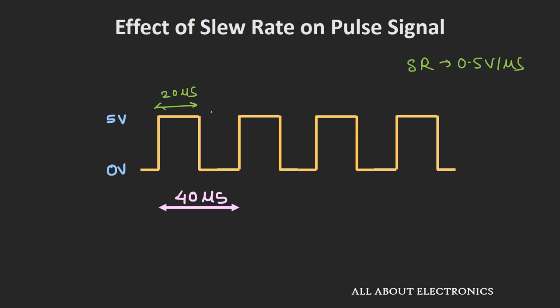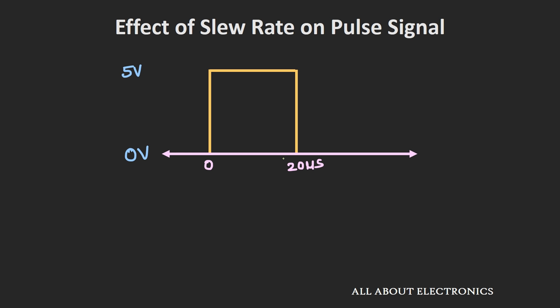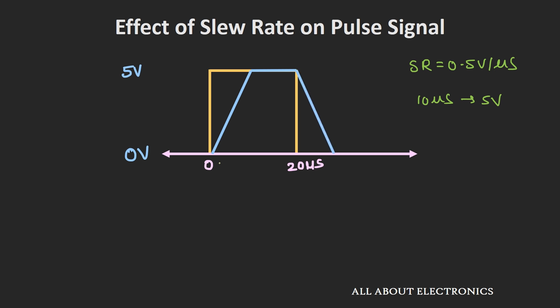Considering only the first pulse: in the ideal condition the response should be a perfect square pulse, but with a slew rate of 0.5V per microsecond, the op-amp can only change the output by 0.5V in 1 microsecond. So it will take around 10 microseconds to reach 5V, then remain flat up to 20 microseconds, and then again take 10 microseconds to reach back to 0V. In this way, because of the slew rate, the output waveform gets distorted.